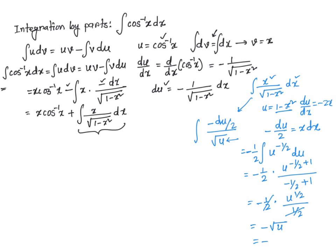That is the same as negative square root of 1 minus x squared, because u is 1 minus x squared. Now at this point, I just go ahead and take this value and plug it in. So I'm going to replace this integral with the result, giving x cosine inverse of x minus square root of 1 minus x squared, plus some arbitrary constant c.